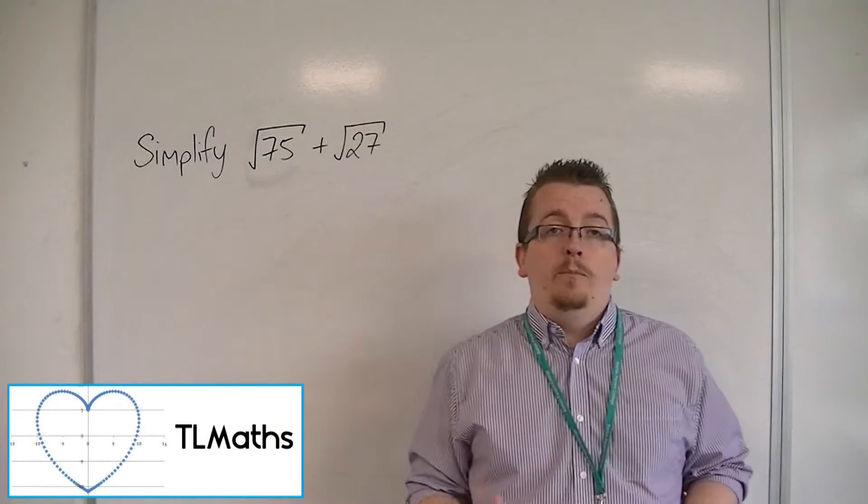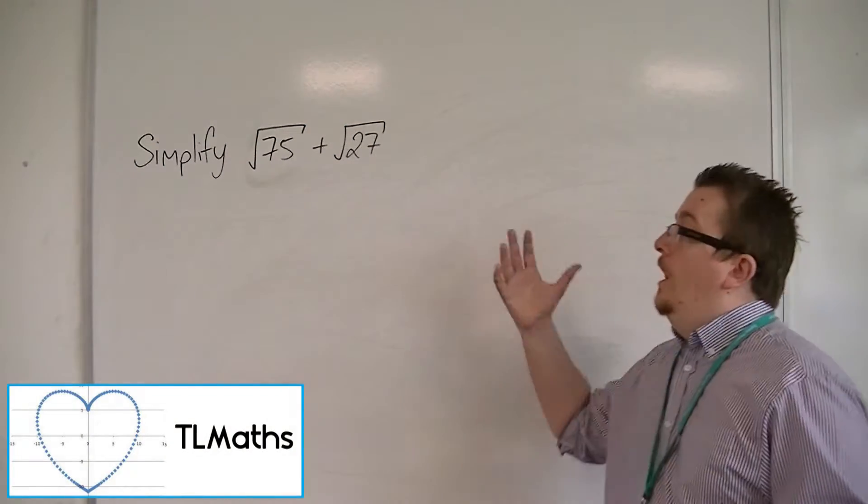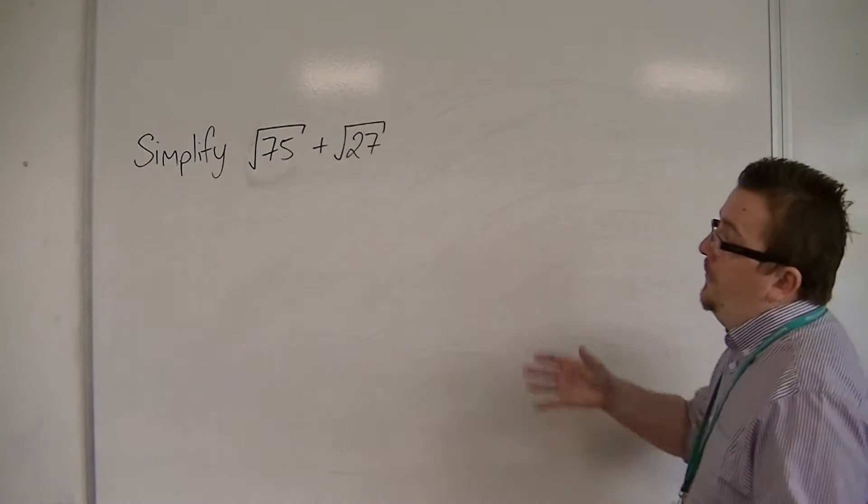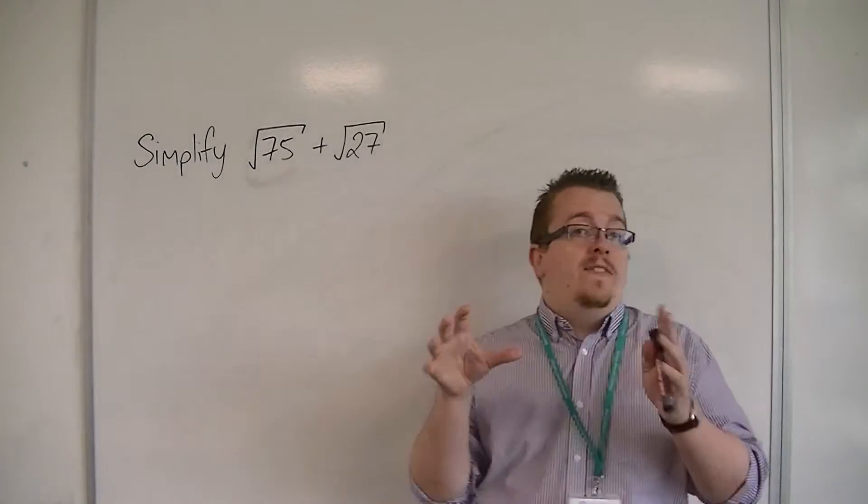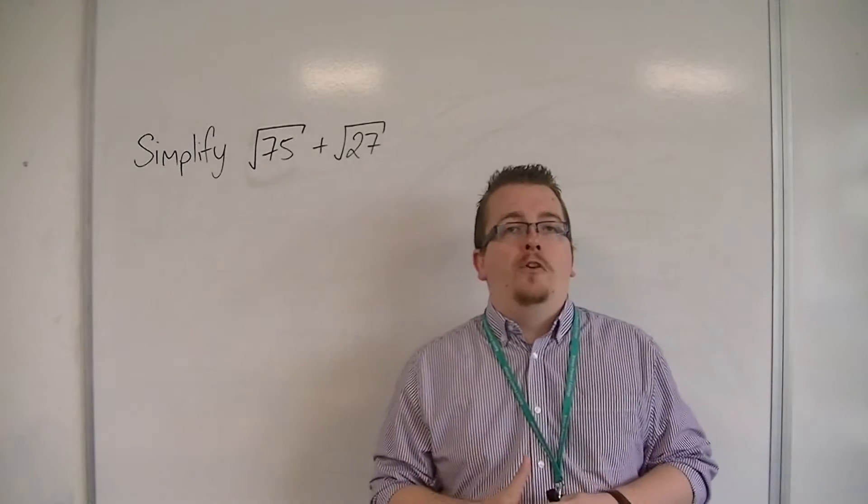A common exam style question runs like this. Simplify root 75 plus root 27, and it usually then says as far as you possibly can.